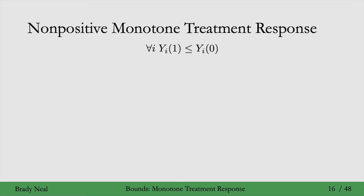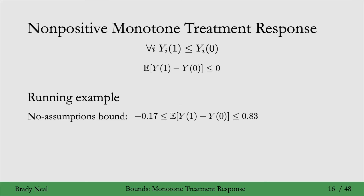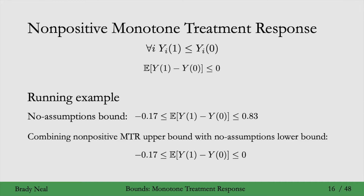The non-positive monotone treatment response assumption implies that the ATE is upper bounded by 0. Plugging this into the running example, if we add the upper bound from the non-positive MTR assumption, we get a much smaller interval of length only 0.17 — much smaller than the trivial interval of length 2, and even smaller than the no-assumptions interval of length 1.